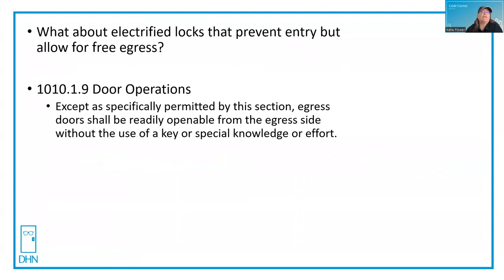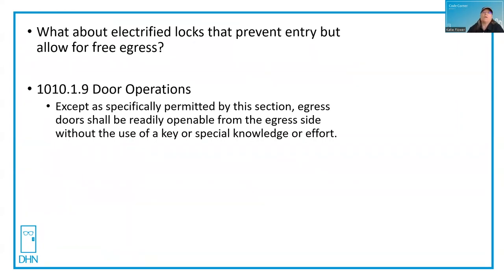But what about electrified hardware — the locks that prevent entry but allow for free egress? Access control can be confusing to AHJs, and some will say that any door that has access control for entry must also meet UL 294. That's not true, unless you're locking the egress side, and that's covered by those special locking arrangements.